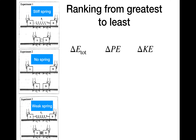Now let's add one more experiment. Experiment one is the stiff spring, experiment two is no spring, and the new third variation is a weak spring, where the spring constant is just a smaller value than in experiment one. If we compare these three and rank by change in total energy: in all three cases we have the same force from the hands over the same displacement, so the external work is the same. Therefore the change in total energy for all three experiments is the same.